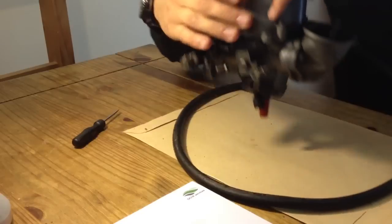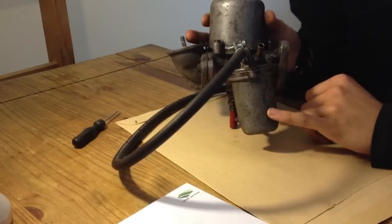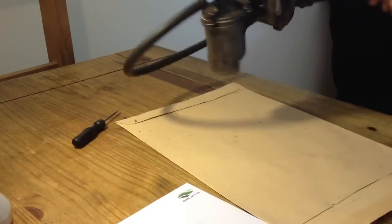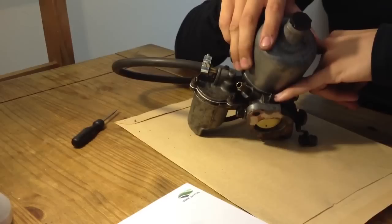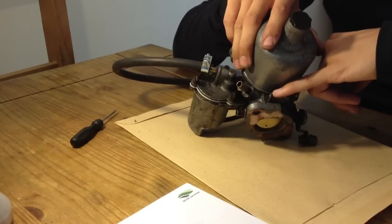On this side we have the float chamber, we have the fuel inlet, we have the breather pipe. We also have a vacuum pipe connector here which would go from here between here and the distributor.